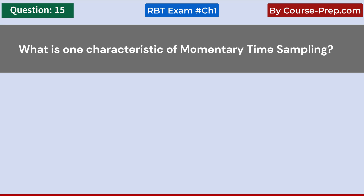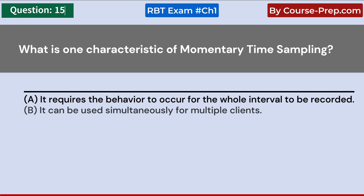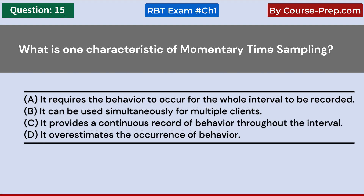What is one characteristic of momentary time sampling? A. It requires the behavior to occur for the whole interval to be recorded. B. It can be used simultaneously for multiple clients. C. It provides a continuous record of behavior throughout the interval. D. It overestimates the occurrence of behavior. Answer B: It can be used simultaneously for multiple clients.